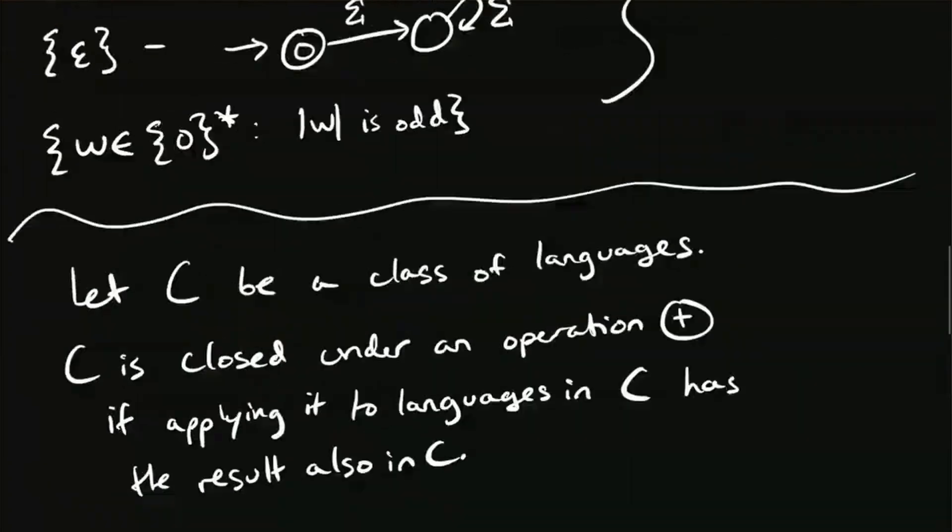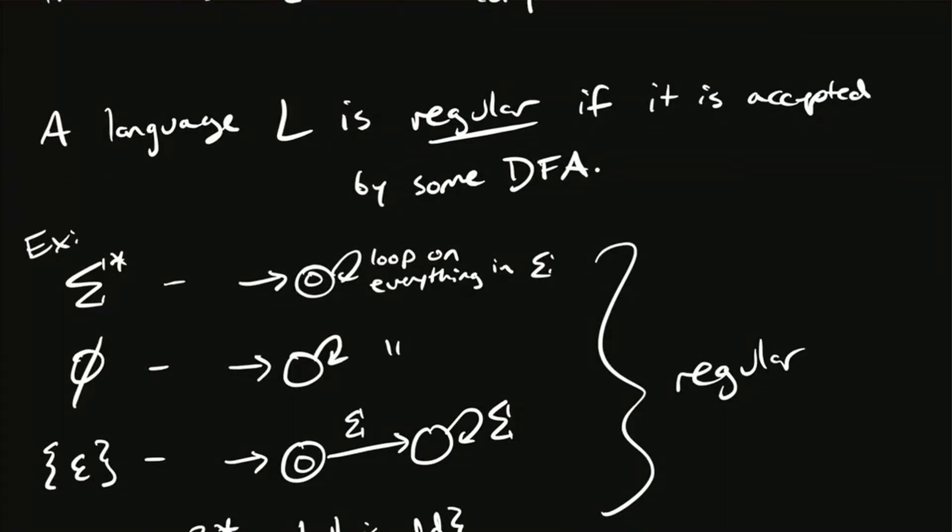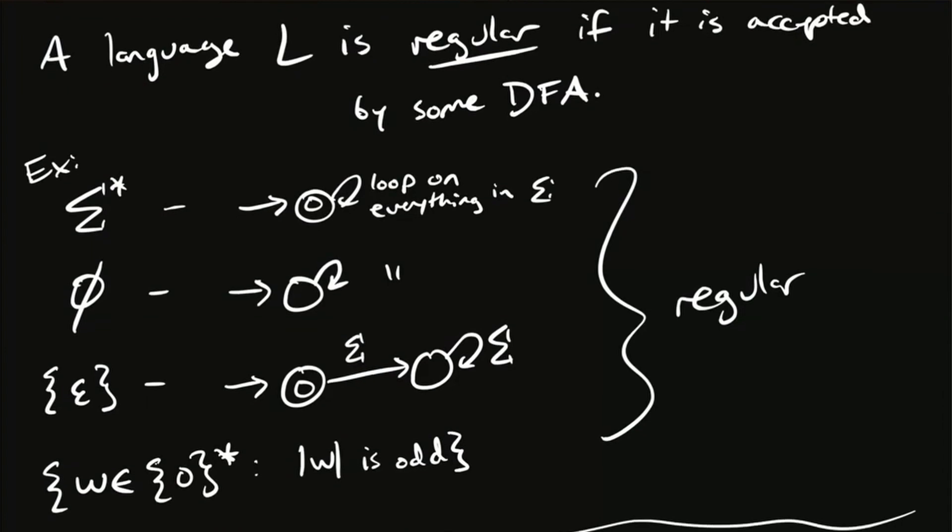We talked about before these examples of DFAs where we saw that we can just flip what states are final and not final, and there's some relation between the language that we obtain afterward and the one that we had before.